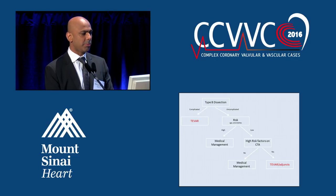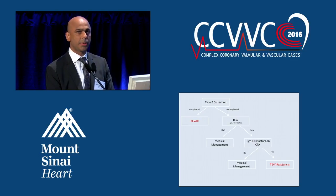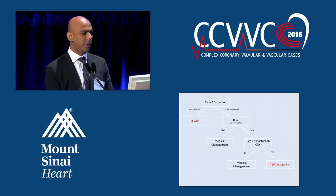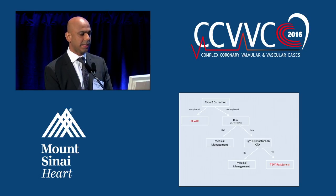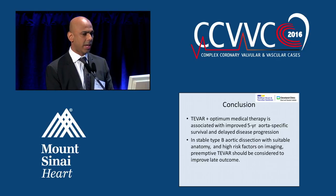This is our usual protocol: if you come in with a complicated type B dissection, you get a TEVAR plus or minus whatever adjunct procedure is needed. For uncomplicated type B dissection, we consider age and comorbid factors. If you're older with significant comorbidities, we manage medically. If you're a low-risk, healthy patient with high-risk factors on CTA, we would offer a TEVAR and adjunct procedure.